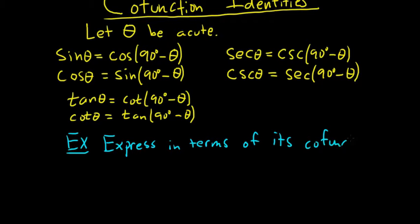All right. So part A. Let's try secant of 39 degrees. So the secant of 39 degrees. Well, how would you do this? Well, the cofunction is cosecant. So this would be cosecant. And then this is your theta here. This is your theta.